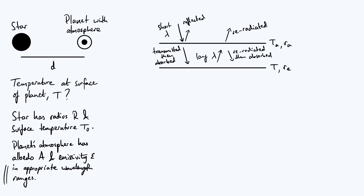There are simplifying assumptions in this model. We pretend the planet's surface behaves as a perfect black body — albedo close to zero and emissivity close to one — which is a pretty good approximation for Earth. We could also introduce more atmospheric layers, all in equilibrium with each other, to refine the model, but the number of parameters would quickly get out of hand. The method will be familiar from the previous video on the temperature of a dust grain around a star.